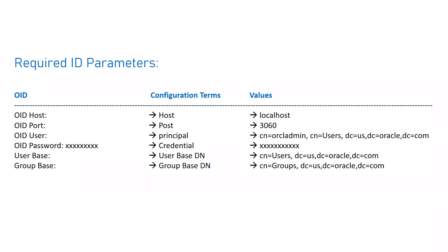The configuration term for this is 'Principal', and then you have 'Credentials' — the password for that particular user. Then there is 'User Base DN' and 'Group Base DN'. As mentioned, in OID all users are stored inside a common group which is 'cn=users' followed by the realm-specific entries from installation. Similarly, you have a Group Base DN: 'cn=groups' followed by the same realm configuration.